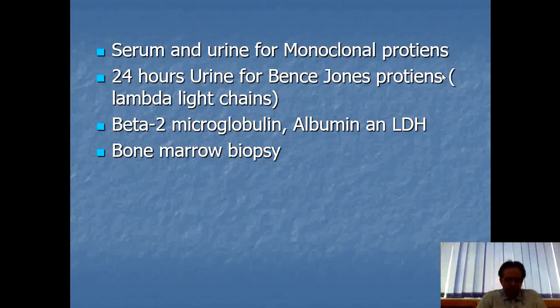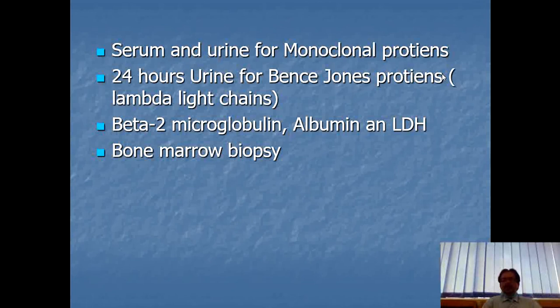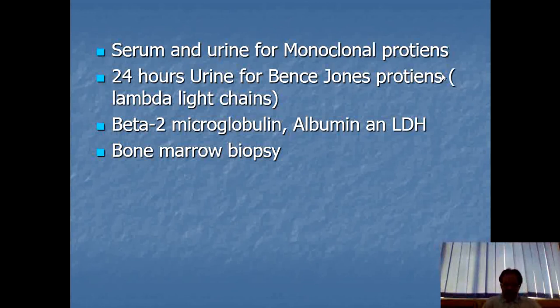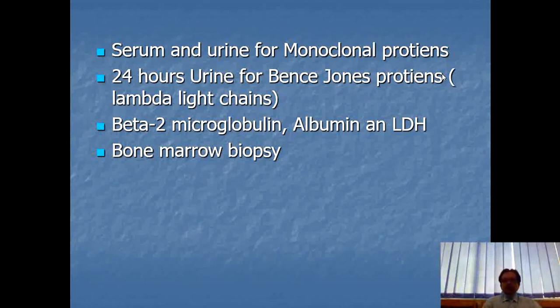Beta-2 microglobulin is a protein encoded by the beta-2M gene. It is used as a tumor marker for blood cancers and has an association with malignancies. It evaluates the severity and prognosis of multiple myeloma, CLL, and non-Hodgkin lymphoma.